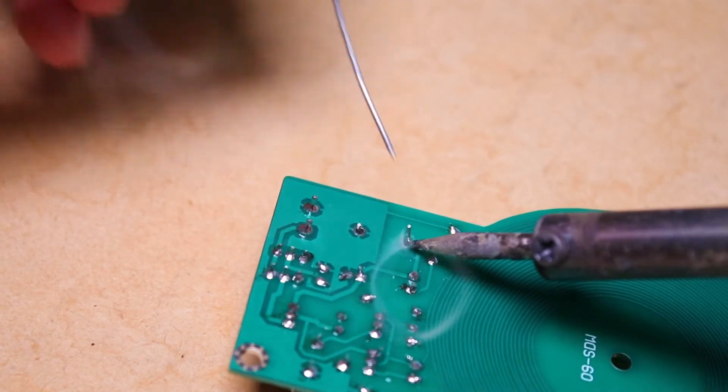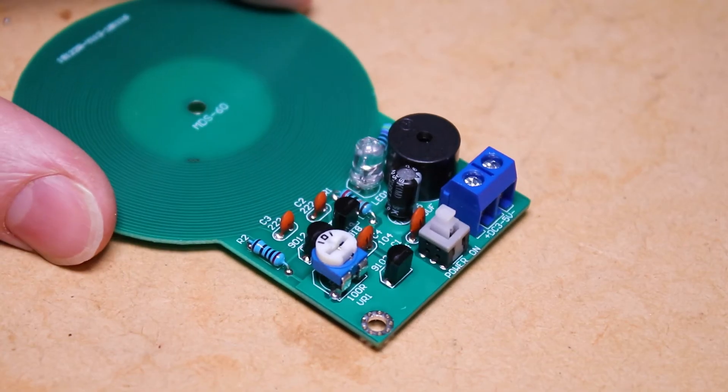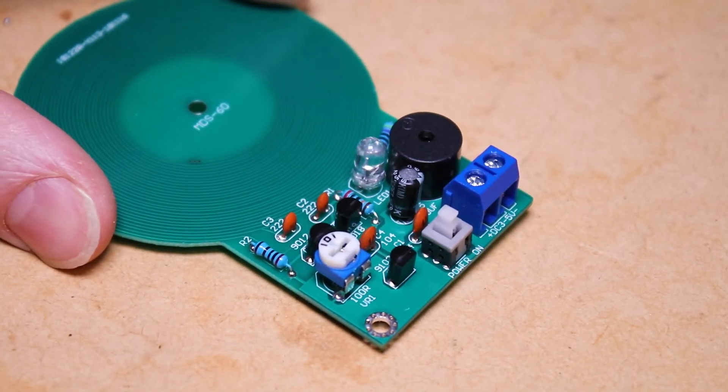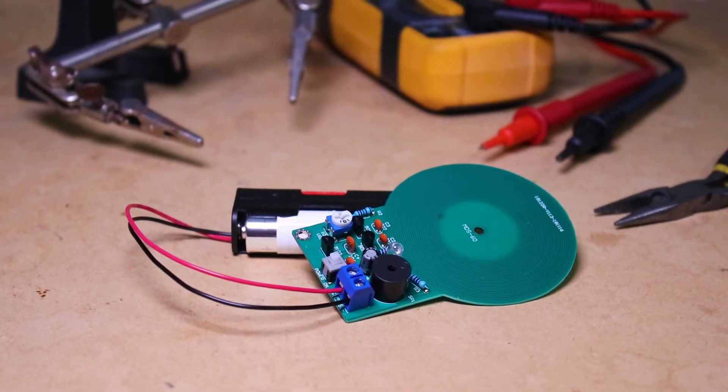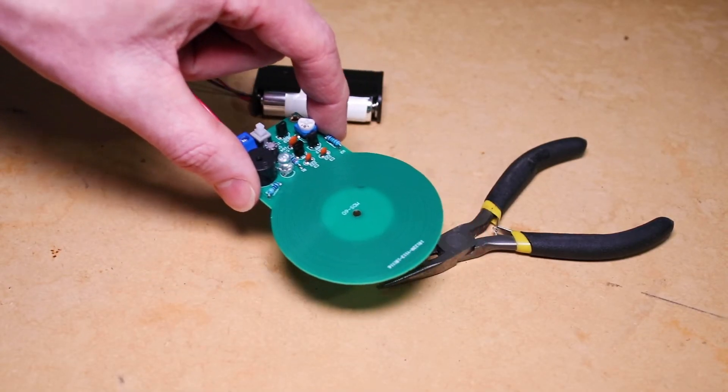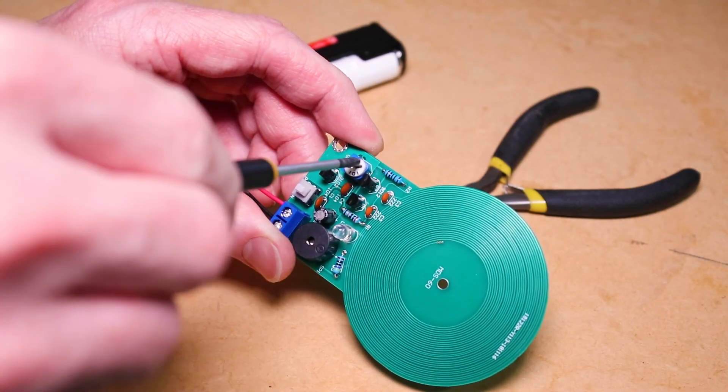With all components soldered in place and checked, we can then connect the AA battery pack and power up our metal detector. We can also connect the other parts of the kit build.